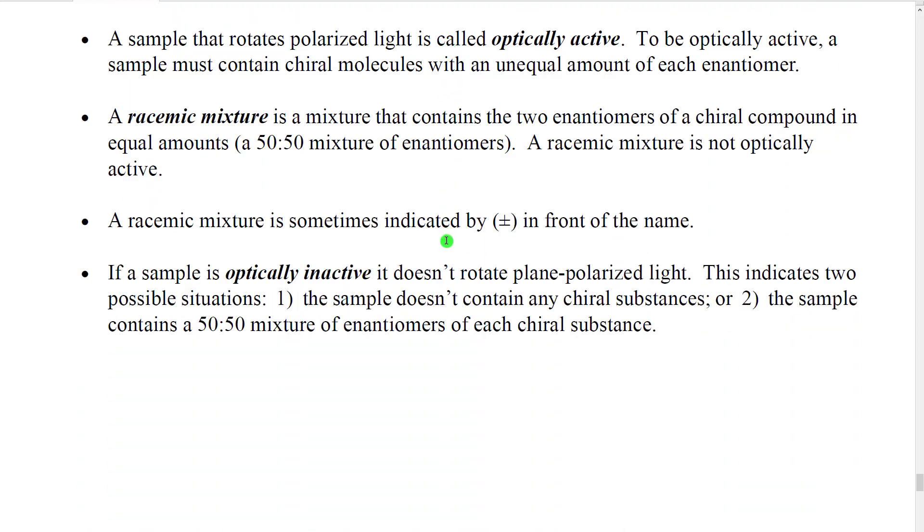This then leads to some terminology that is useful but also potentially confusing. What we say is that if we have a sample of a substance, and that sample rotates polarized light, then that sample is said to be optically active. To be optically active, a sample has to contain chiral molecules and it has to have an unequal amount of the two enantiomers of the molecule. Now, a mixture that has exactly the same amount of two enantiomers, in other words a 50-50 mixture of enantiomers, is given a special name. It's called a racemic mixture. The important thing about a racemic mixture is that a racemic mixture is not optically active.